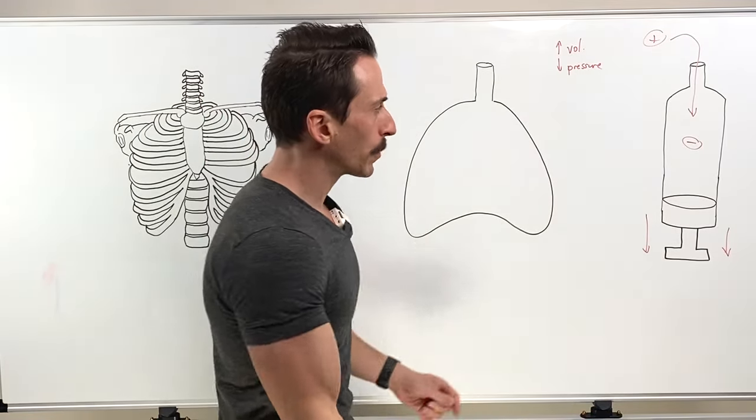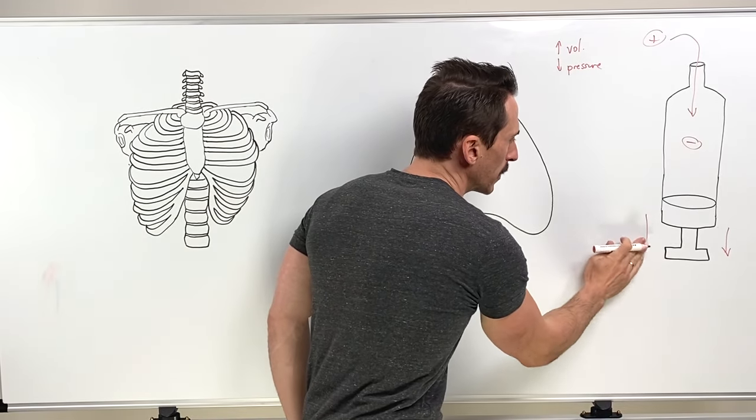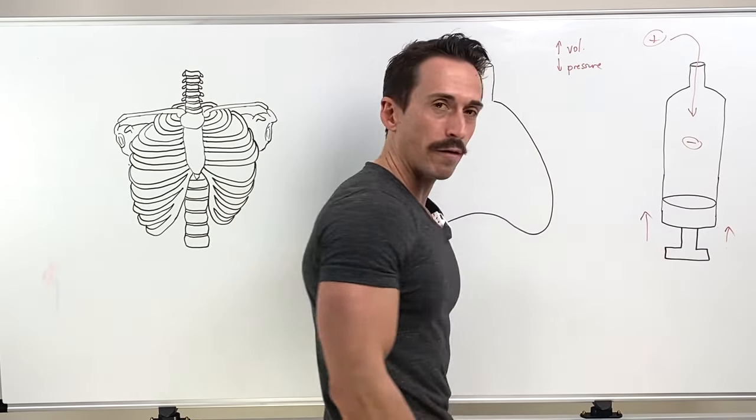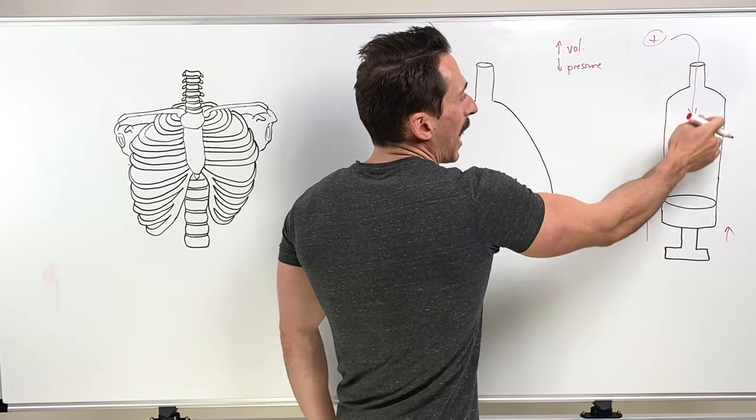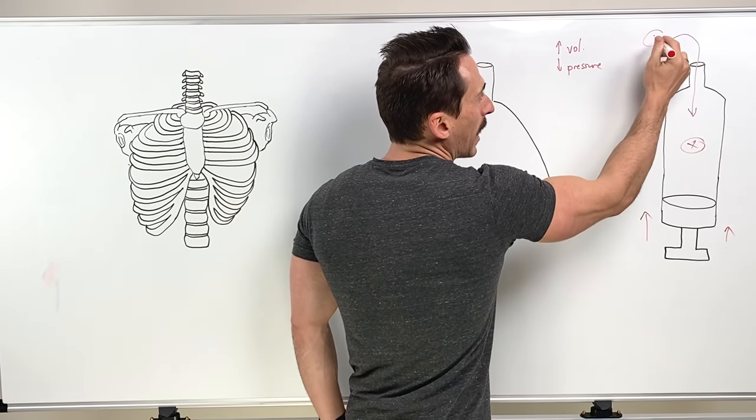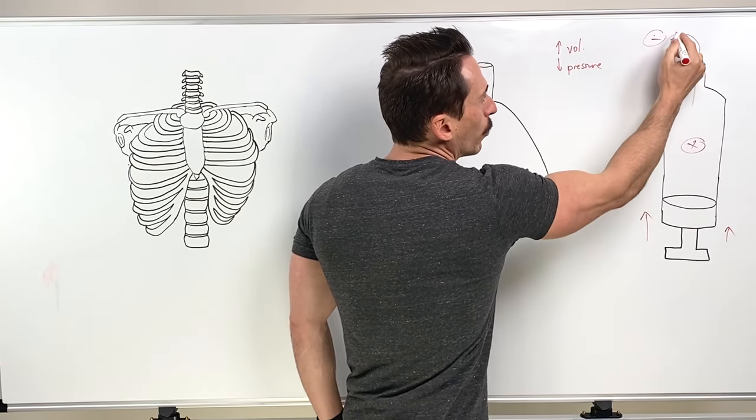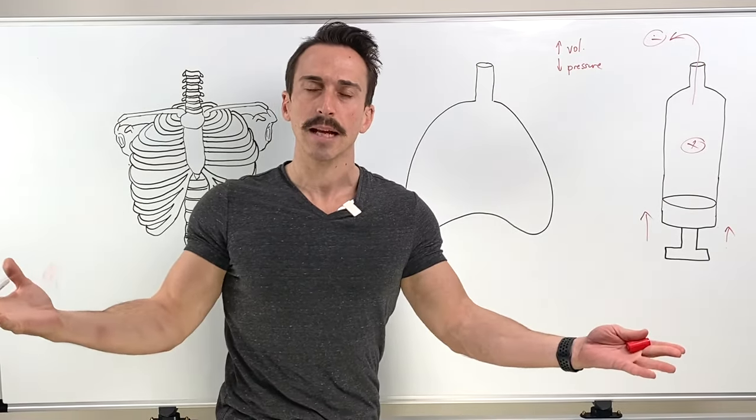We want to expire or exhale. What do we do? The opposite. We decrease the volume, increasing the pressure, and inside the pressure will be greater than outside and that air will rush out. That's it. That's breathing.